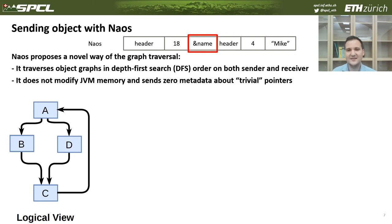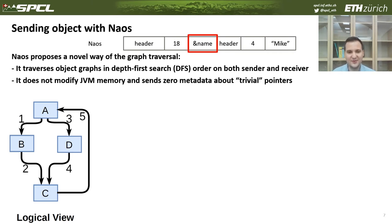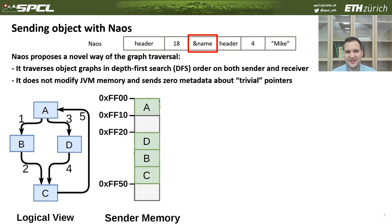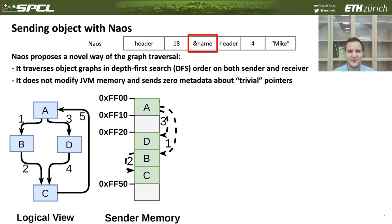The core idea of our algorithm is that we traverse objects in DFS order on both the sender and receiver. Since we fix the way we traverse these references, we can perform compression on the metadata we need to send. References would be visited in a fixed order. In the sender's memory, objects can be anywhere and not ordered in DFS order. We split pointers into two categories: trivial pointers — pointers one, two, and three — which point to objects for the first time during DFS traversal.